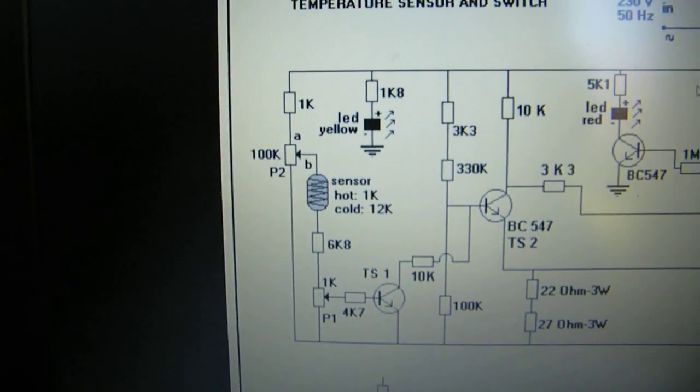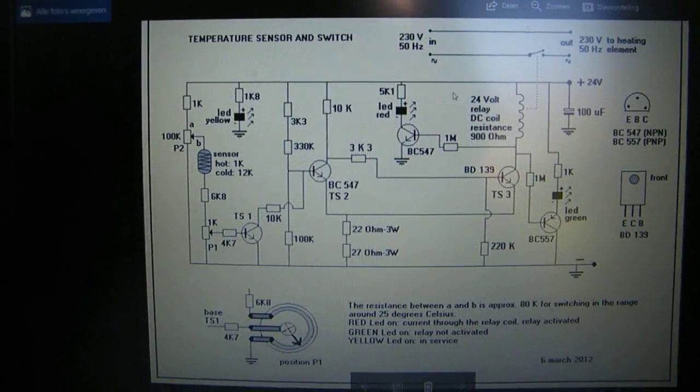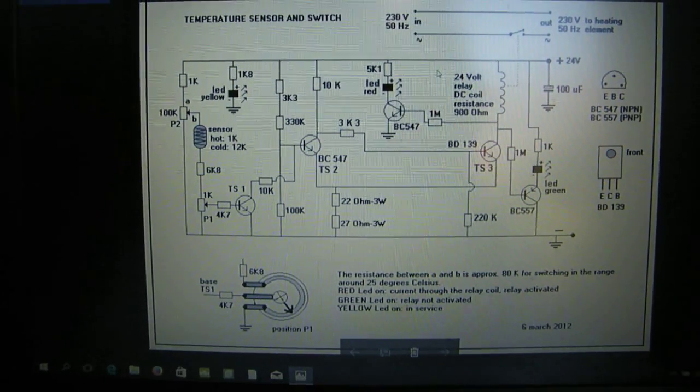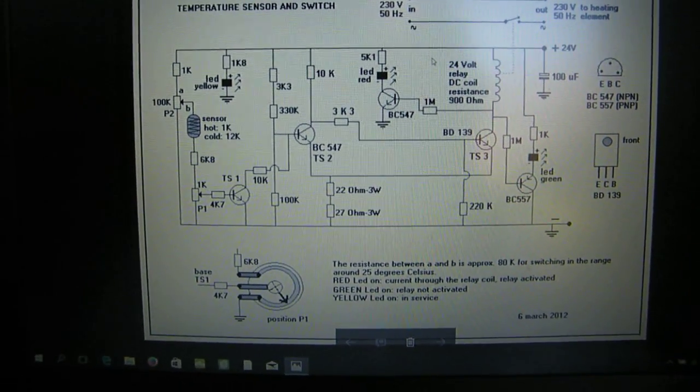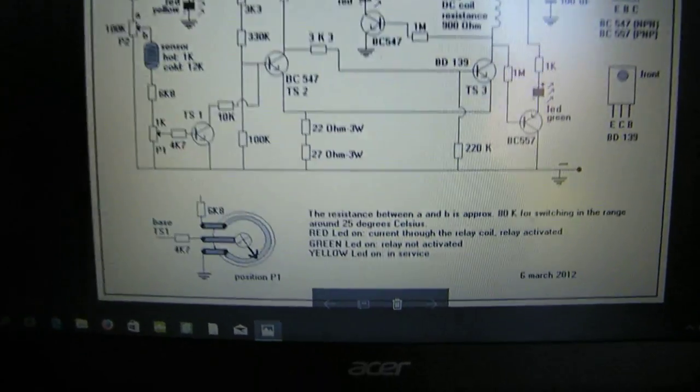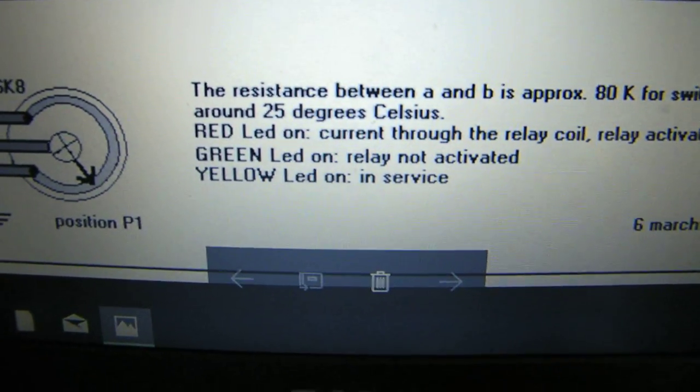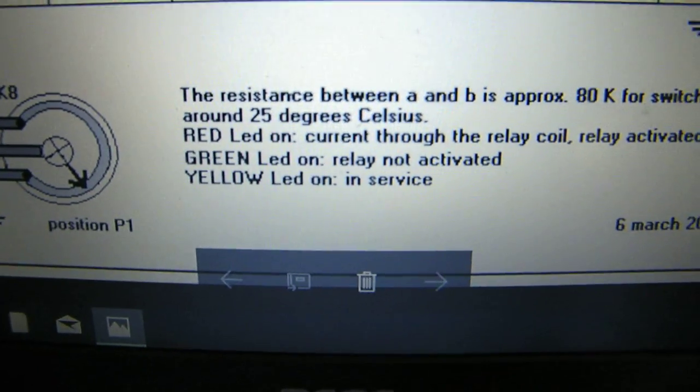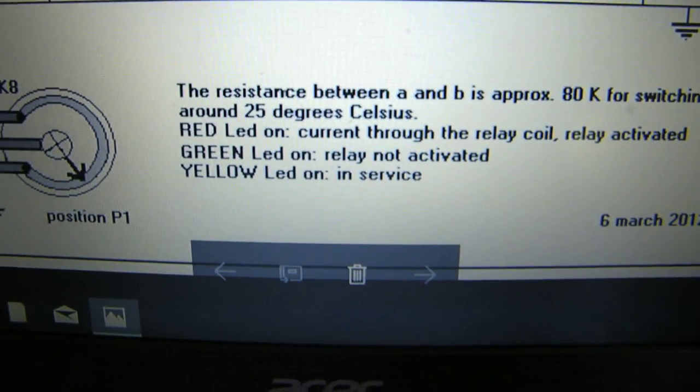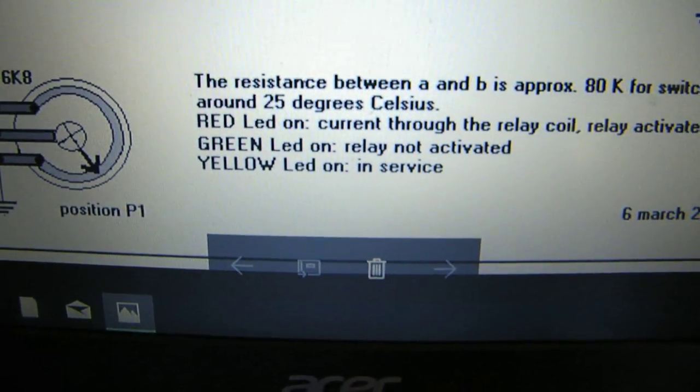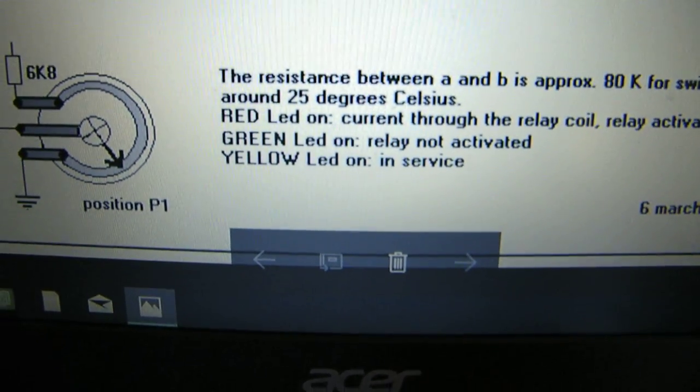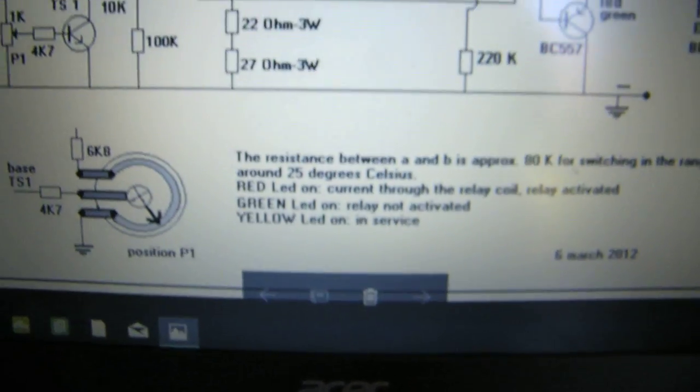There are a few LEDs in the circuit that indicate the functioning of the circuit at a certain moment. And here is the description: red LED on, current through the relay, relay activated. Green LED on, relay not activated. And yellow LED on, the whole circuit is in service.